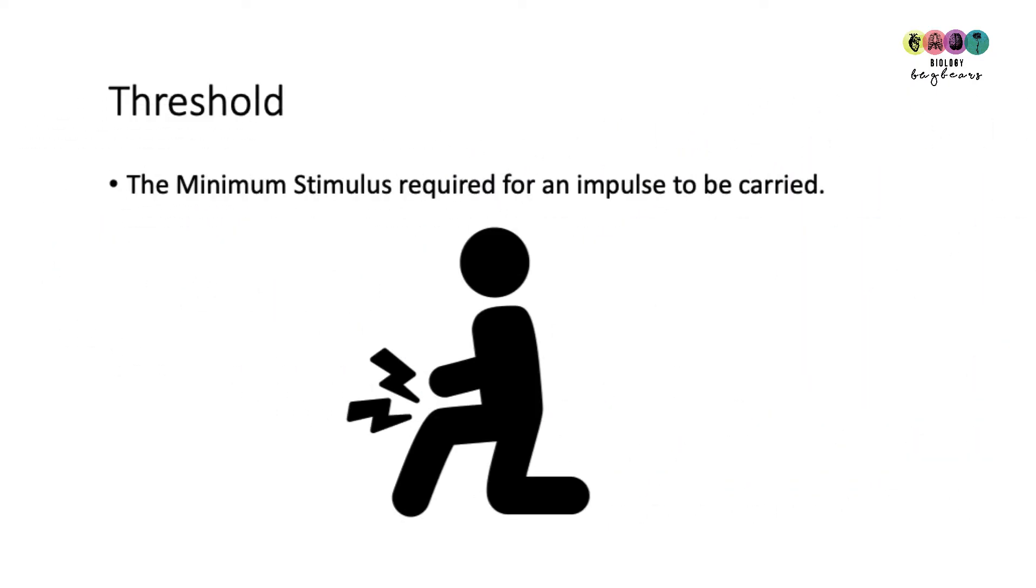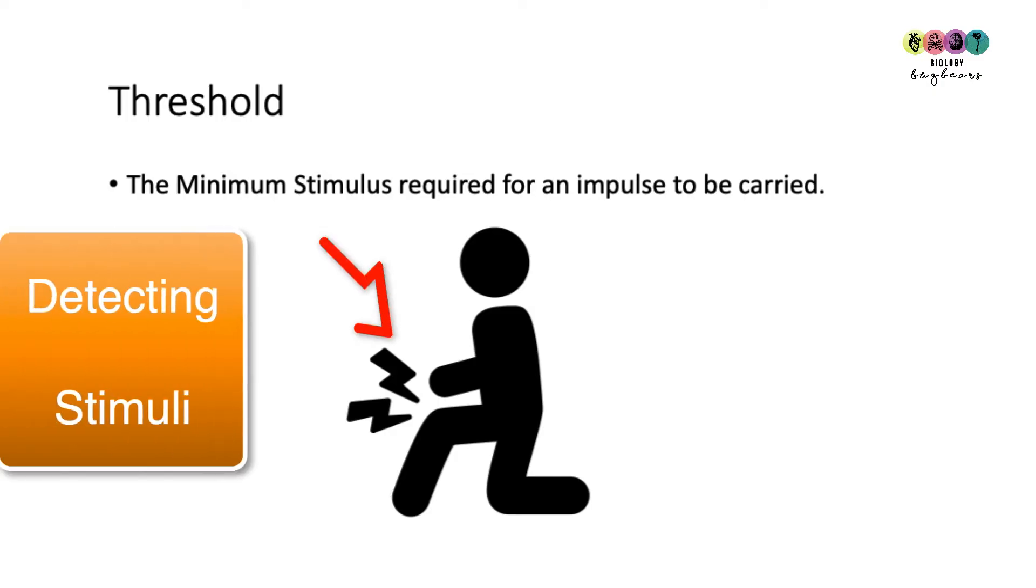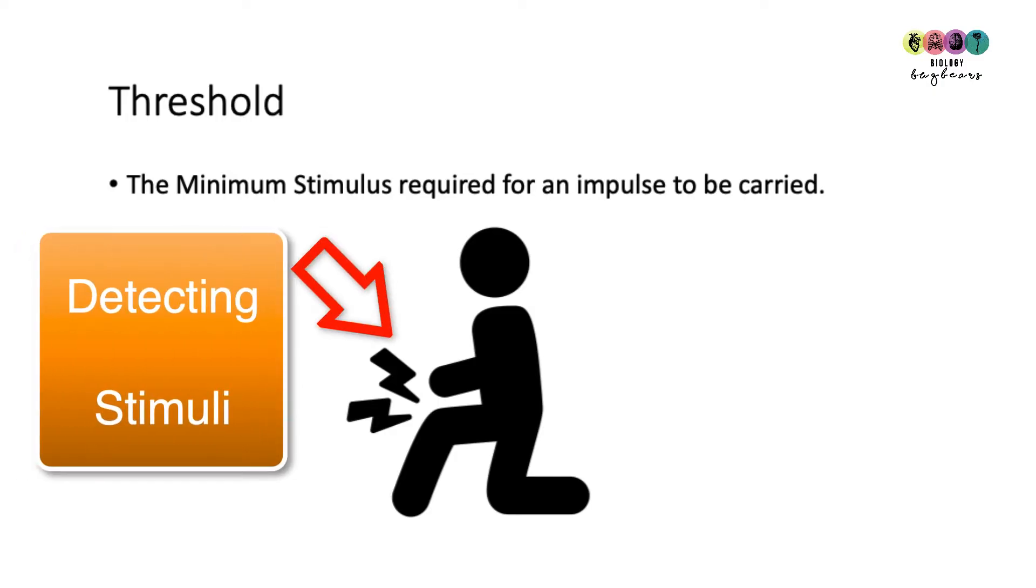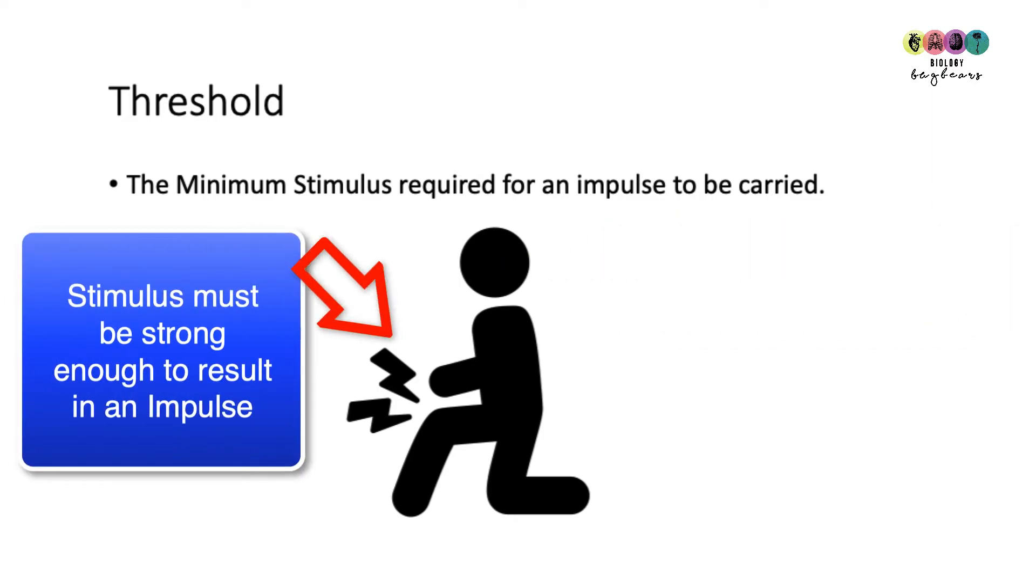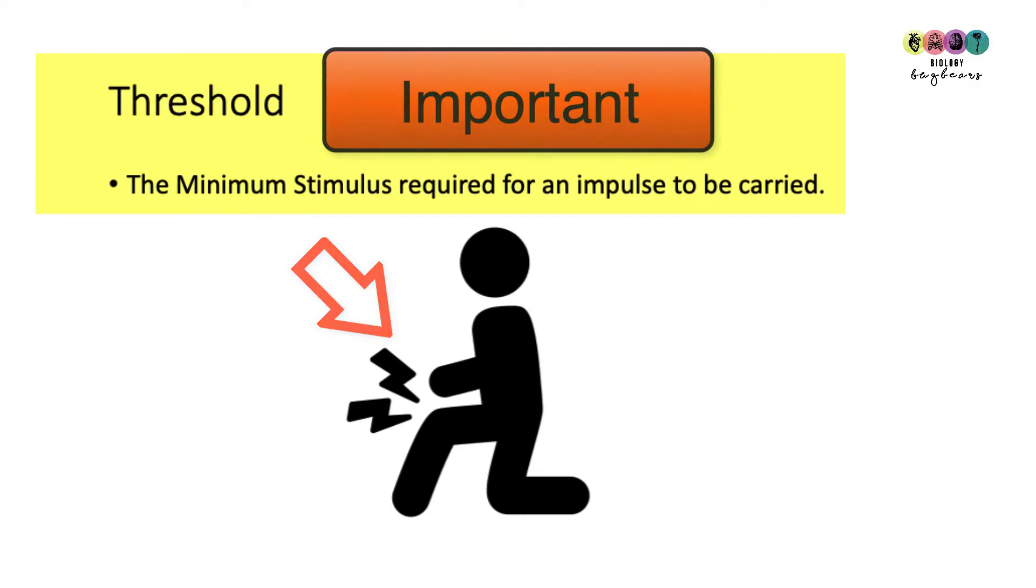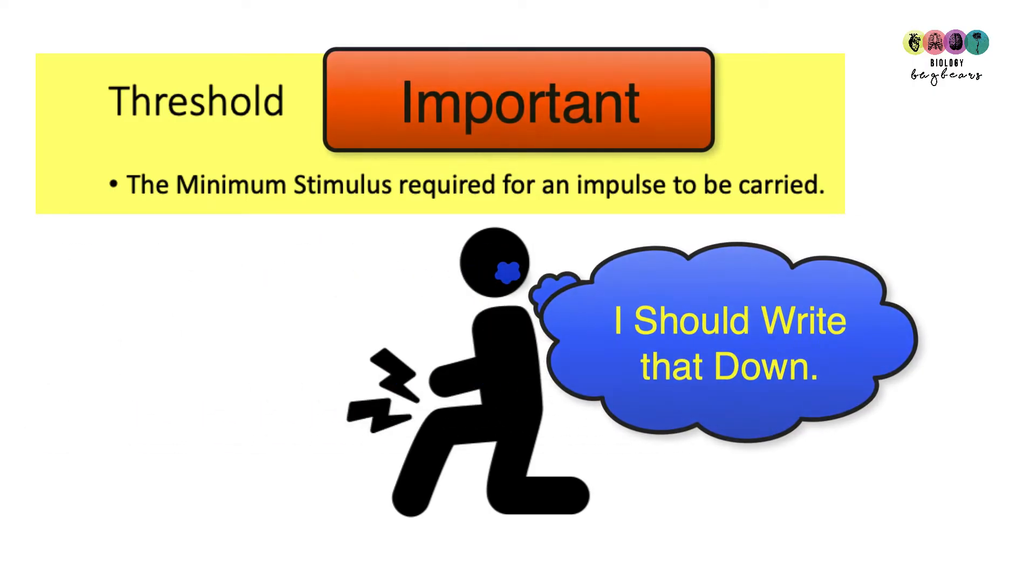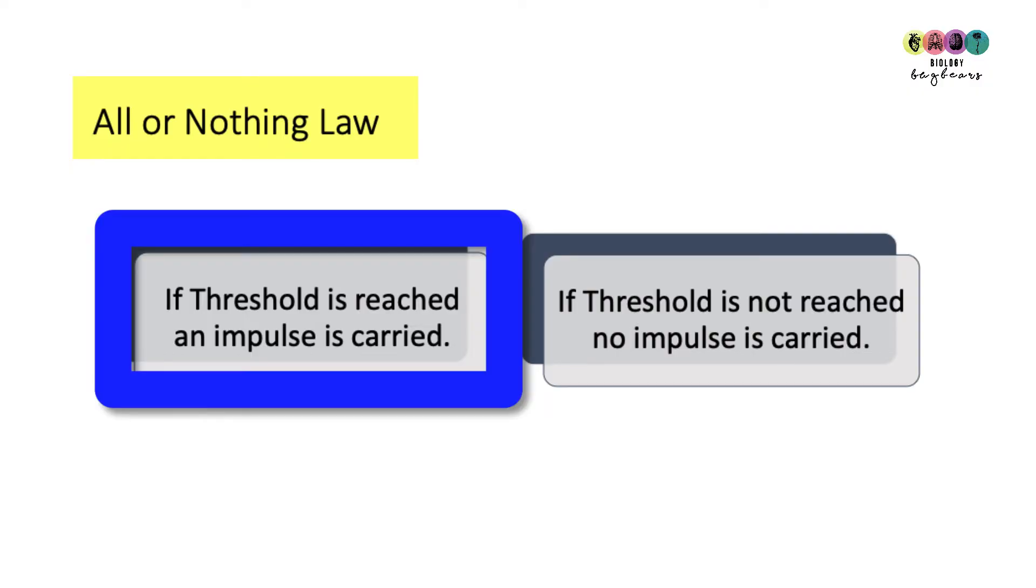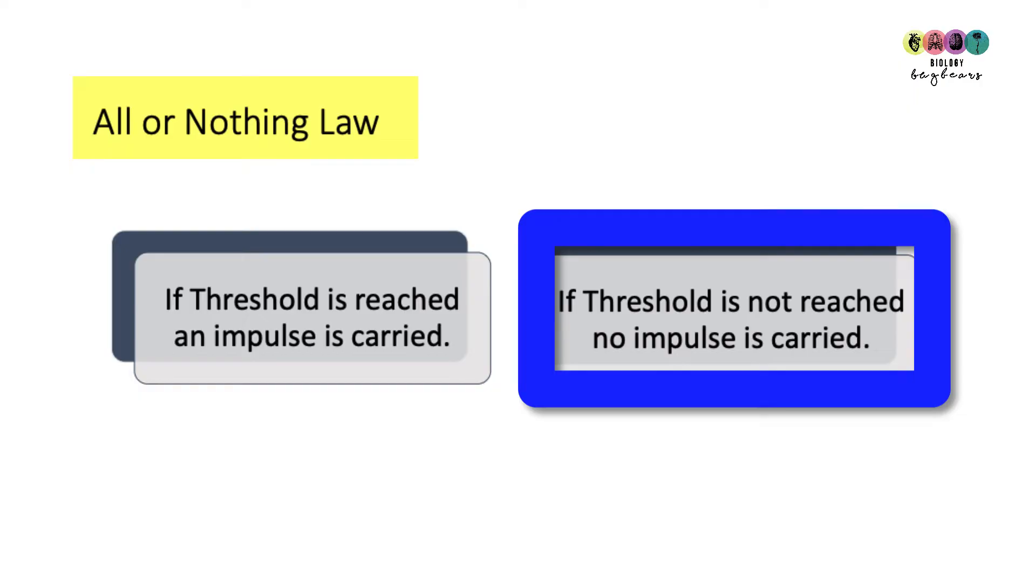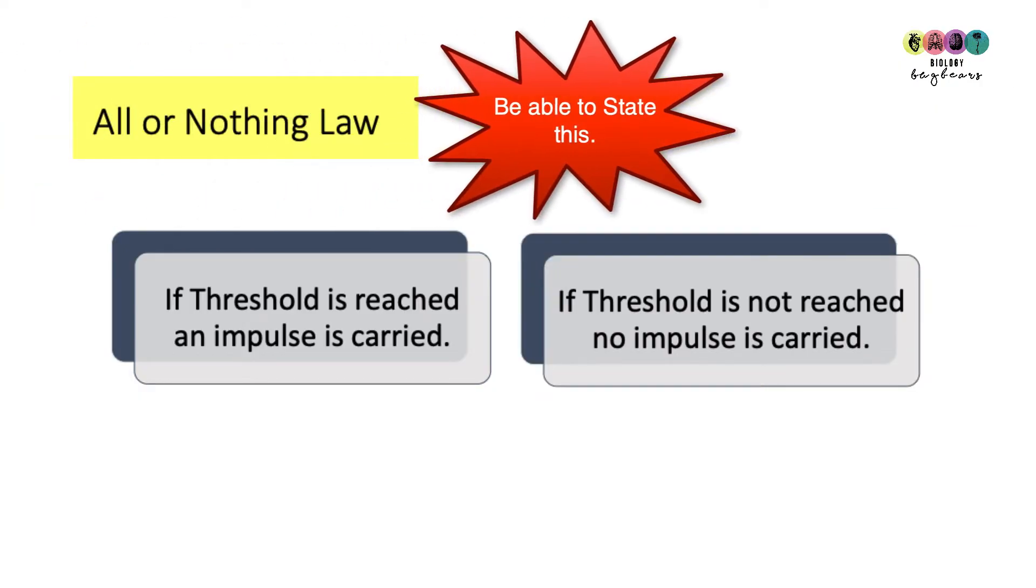We learned in the last video that the nervous system is all about detecting stimuli which results in an electrical impulse being generated and carried towards the central nervous system. However, the stimulus must be of a particular strength in order for any impulse to be carried, and the threshold is the minimum stimulus required for an impulse to be carried. This leads us to the all or nothing law. If the threshold is reached, an impulse is carried. If threshold is not reached, no impulse is carried.